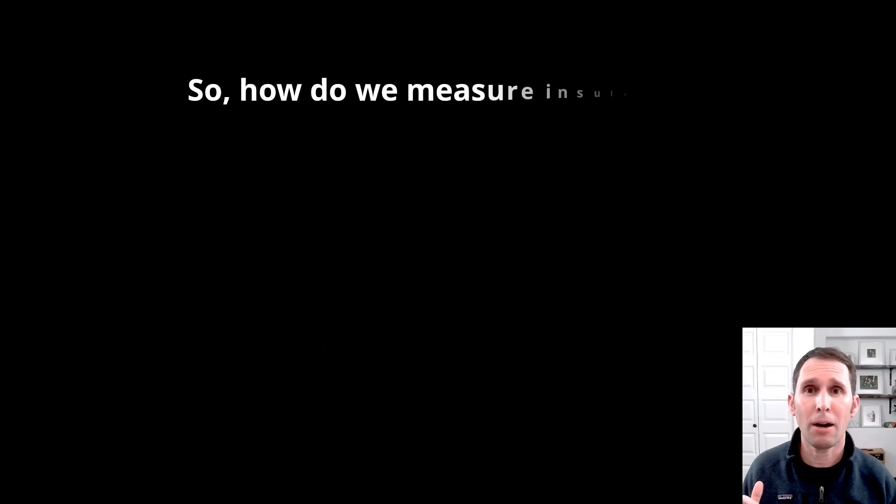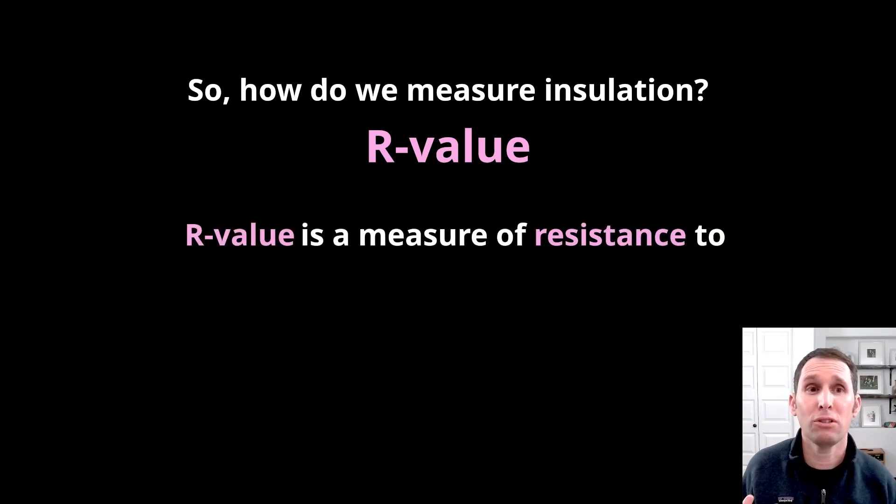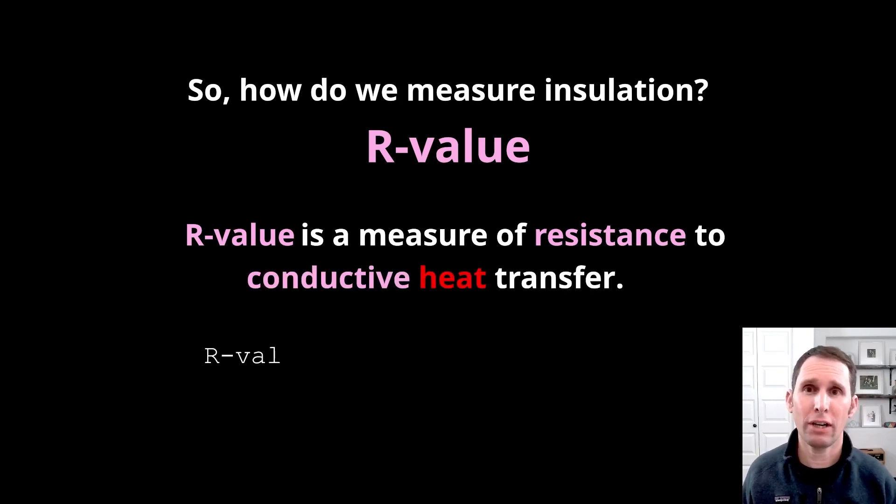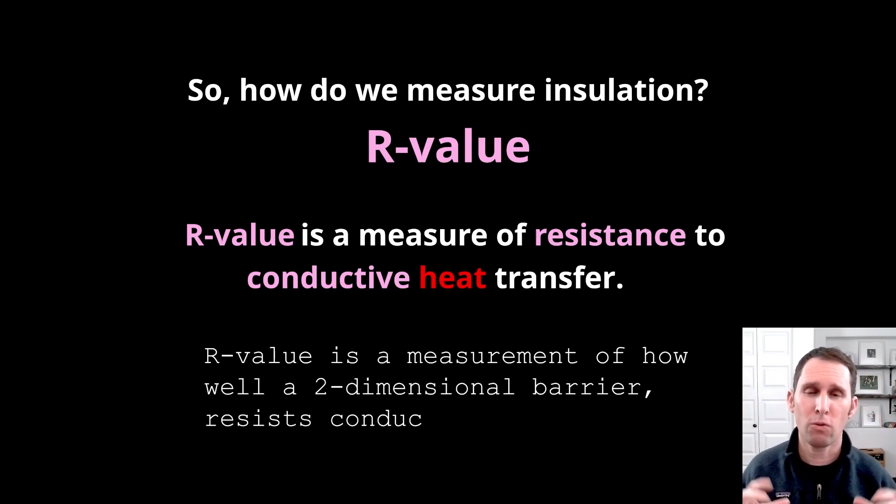So, since we talked about how it works, now we want to talk about how we measure insulation, which is in the measurement of a unit called R-value. An R-value is a measurement of how well something resists conductive heat transfer. So, the technical definition is that R-value is a measurement of how well a two-dimensional barrier resists that flow of heat.